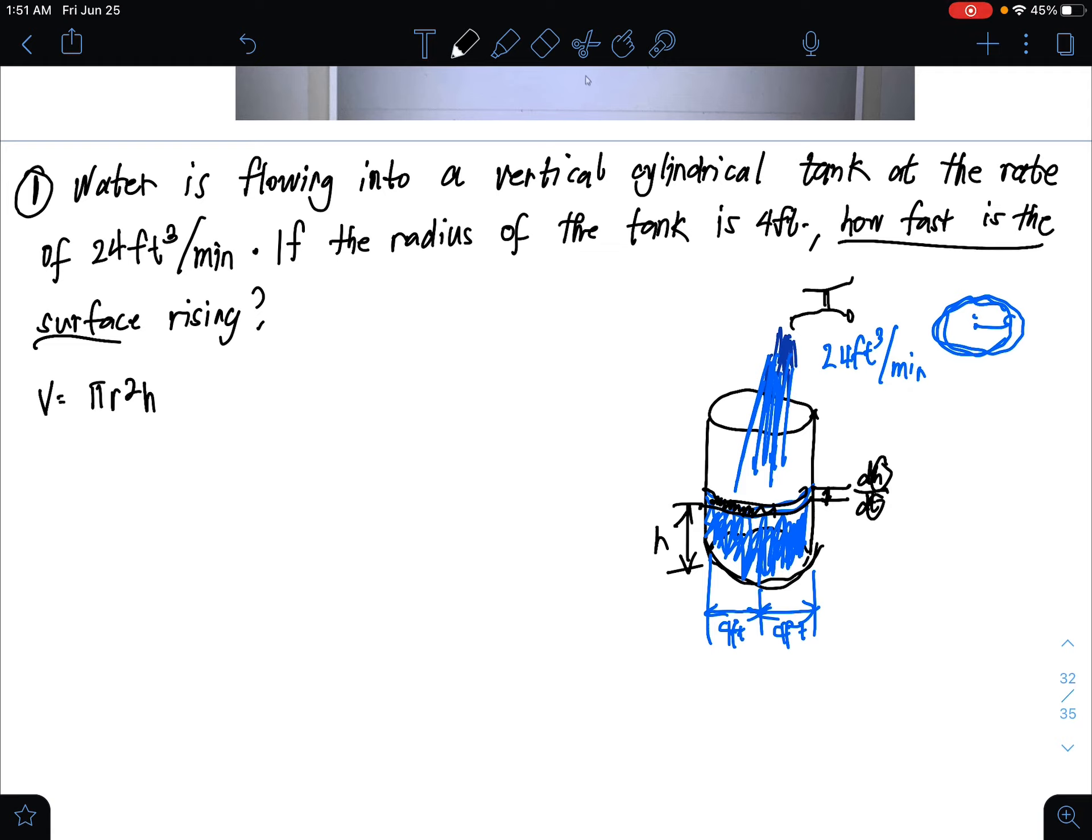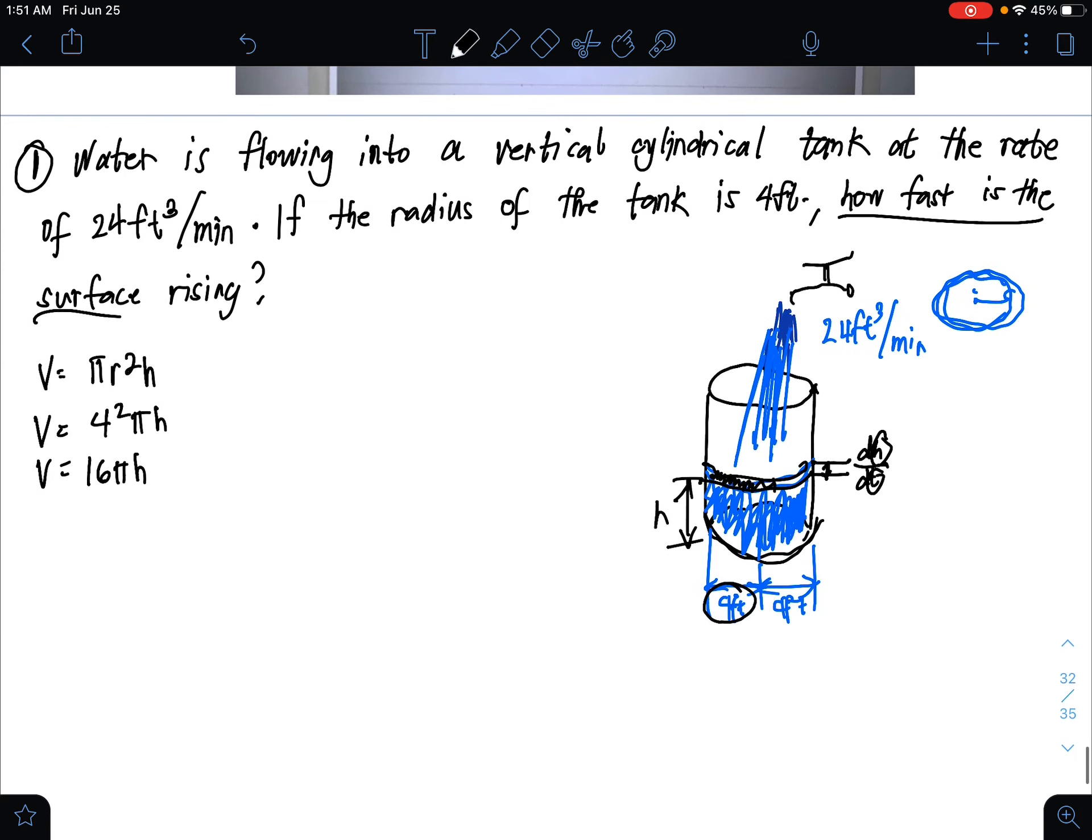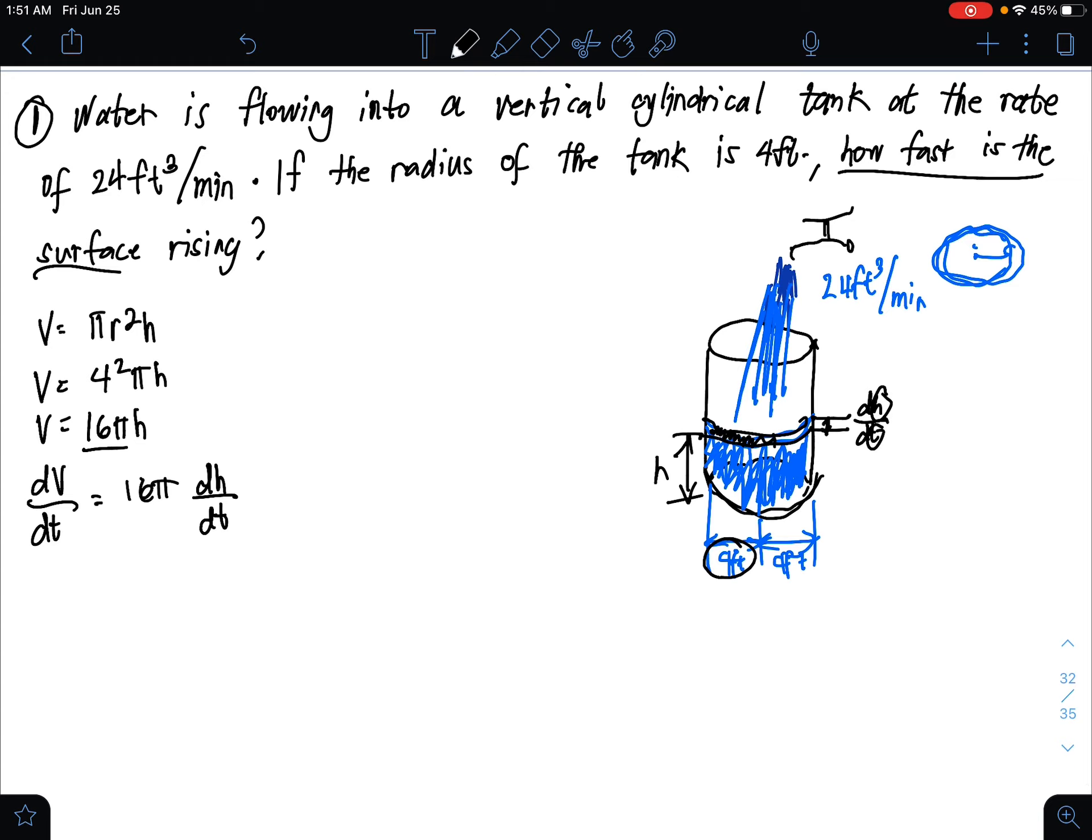Before we differentiate with respect to time, we are going to substitute r first. So 4 squared pi h. Volume is equal to 16 pi h. According to the rule, differentiate with respect to time. Then 16 pi is constant, then dh with respect to time.